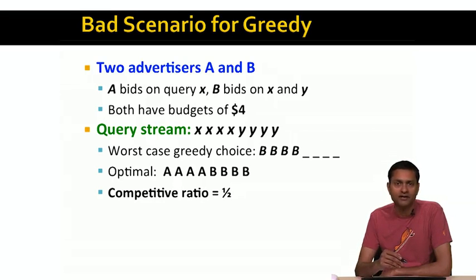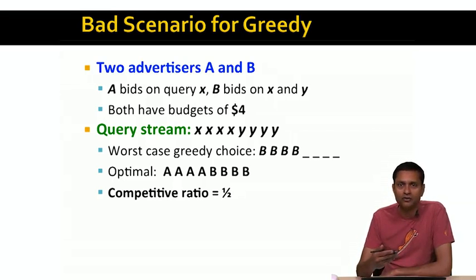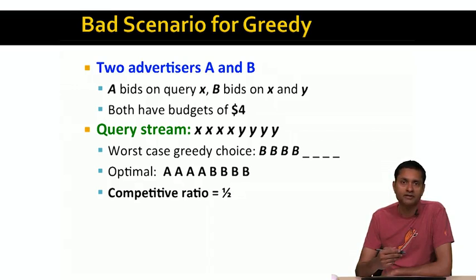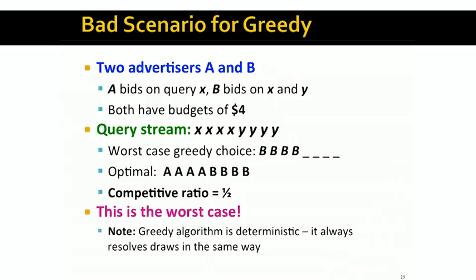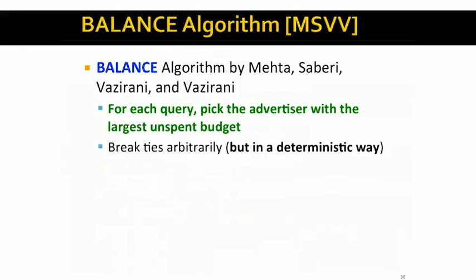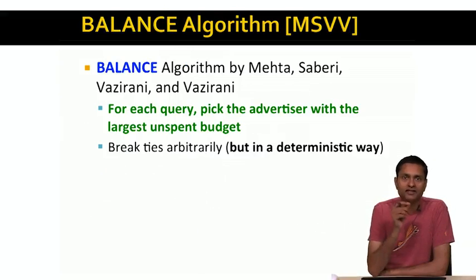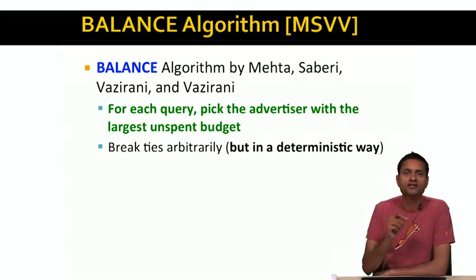It's quite straightforward to prove that the greedy algorithm cannot do worse than this, and the competitive ratio of the greedy algorithm is exactly one-half. The proof is quite similar to the proof in the case of the online bipartite graph matching problem covered in an earlier lecture — I'll leave that as an exercise. The question is: is there an algorithm with a competitive ratio better than one-half? It turns out there is, and it's a very simple algorithm called the balance algorithm. The balance algorithm uses a simple heuristic: for each query, it assigns that query to the advertiser with the largest unspent budget — the largest balance, hence the name.